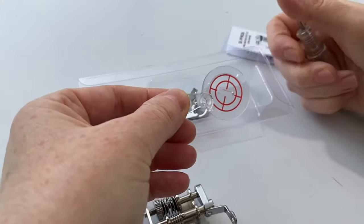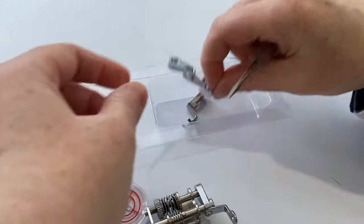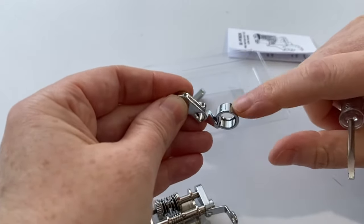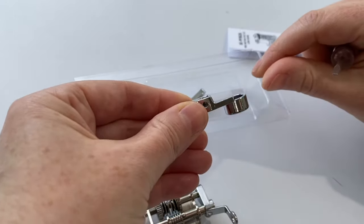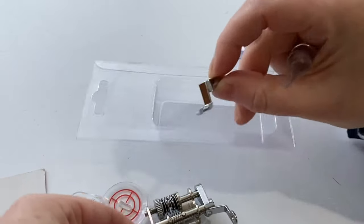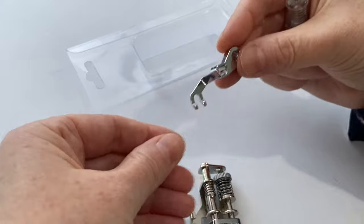It also comes with an echo foot, a ruler foot, so this is for hitting up against your free motion quilting ruler templates, and then this is a darning foot.